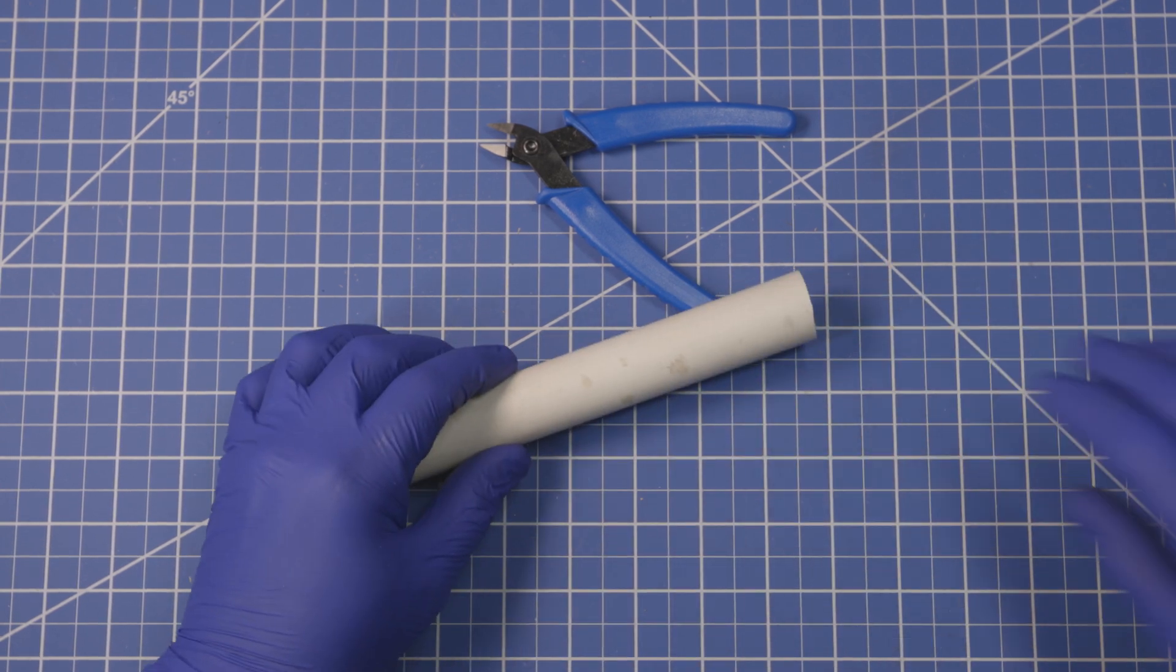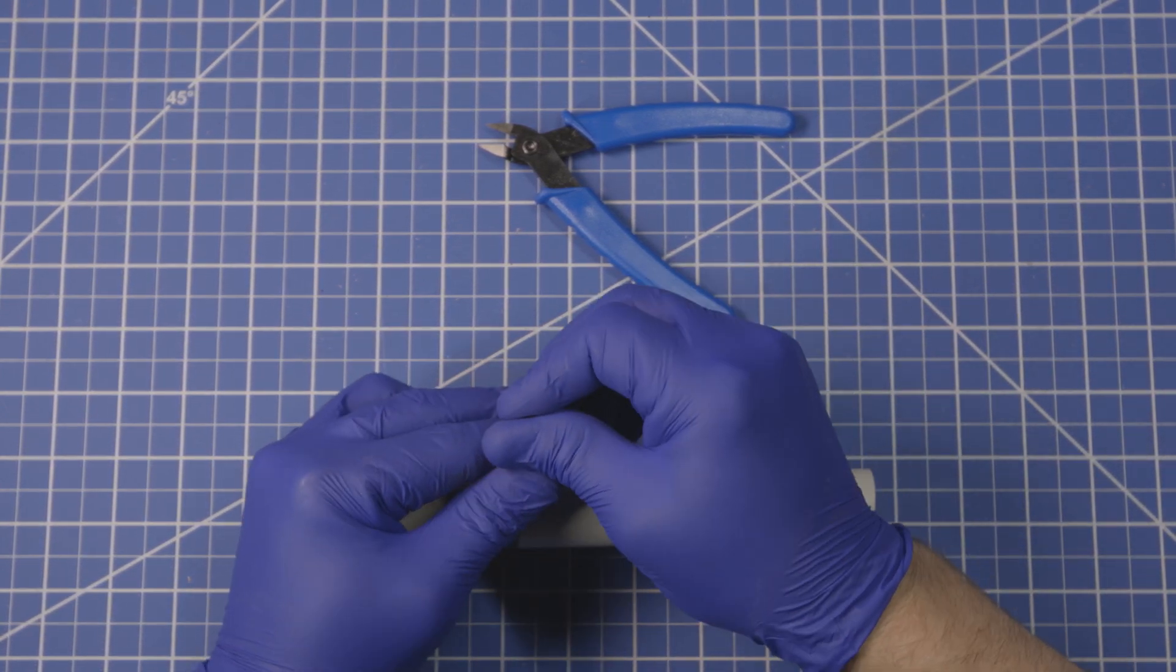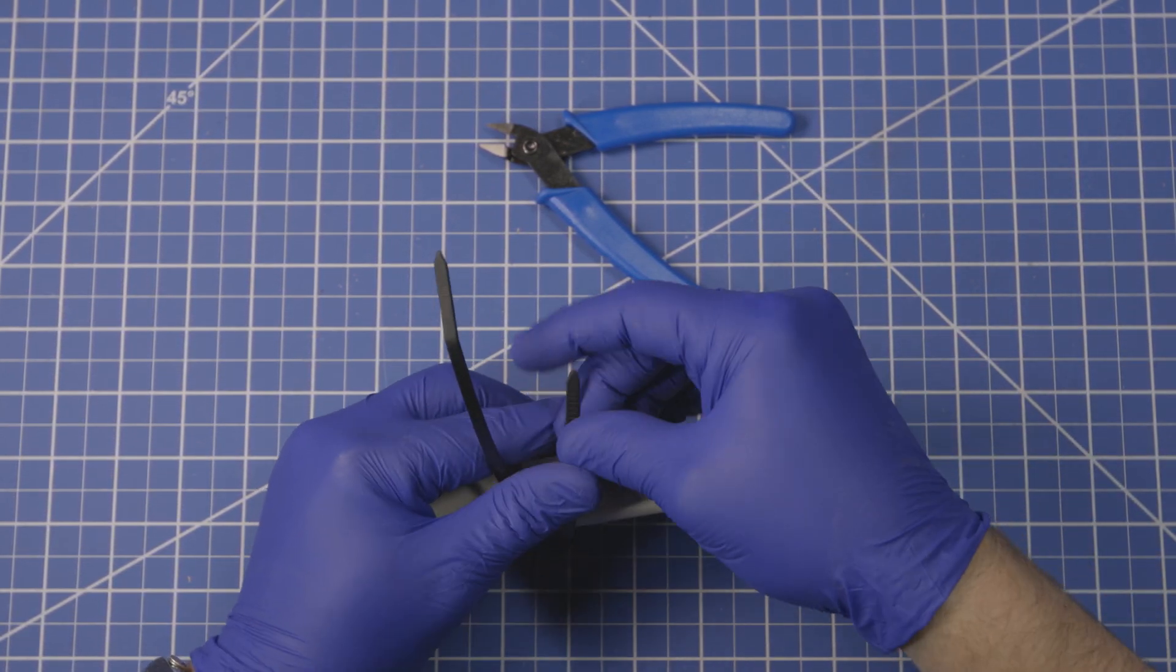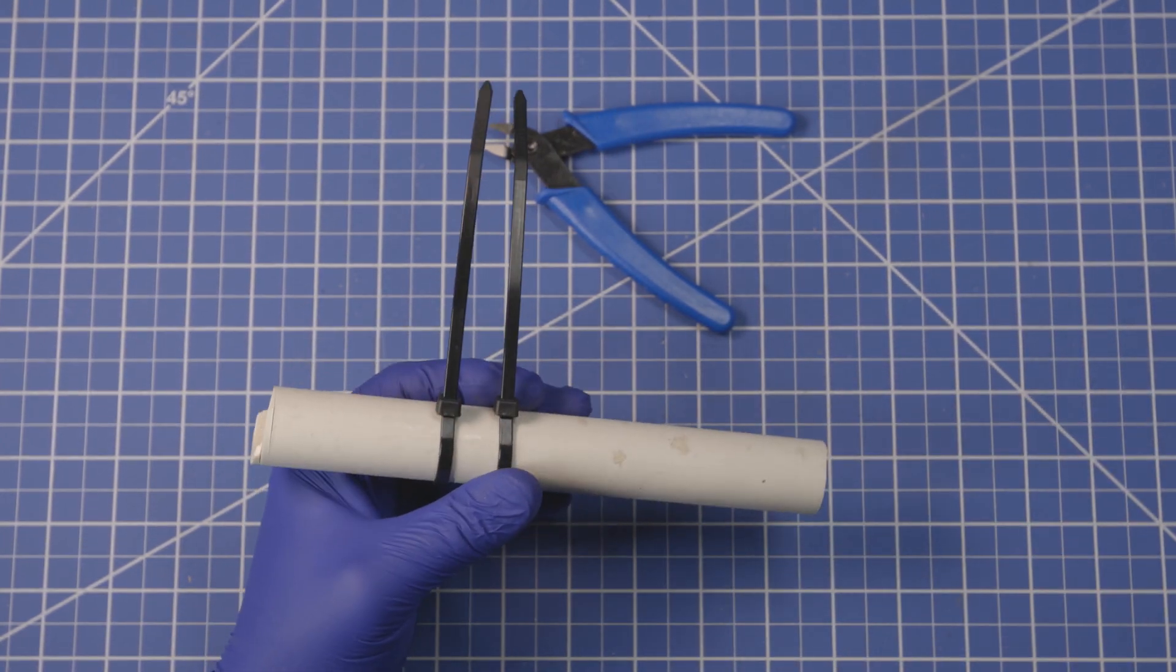So I just grabbed this little piece of PVC for some nice contrast and throw a couple zip ties on here. Now we can put a third one on.